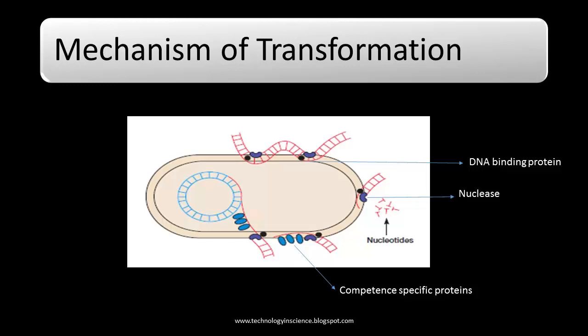When a population becomes competent, bacteria such as S. pneumoniae secrete a small protein called competence factor that stimulates the production of 8 to 10 new proteins required for transformation.